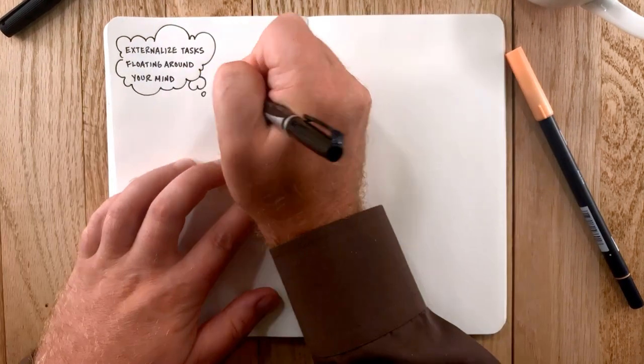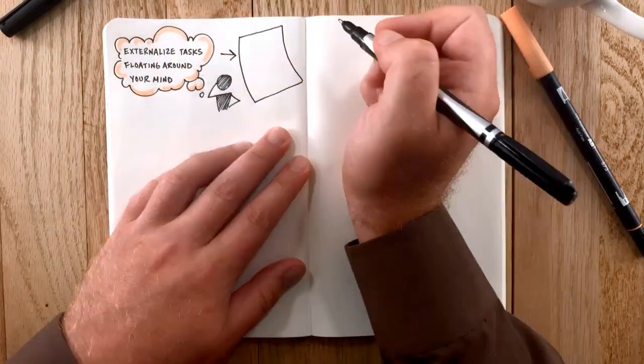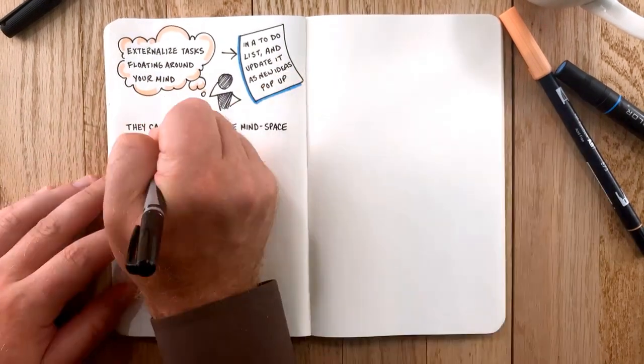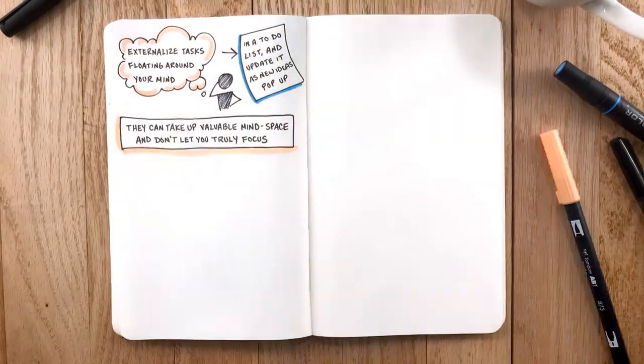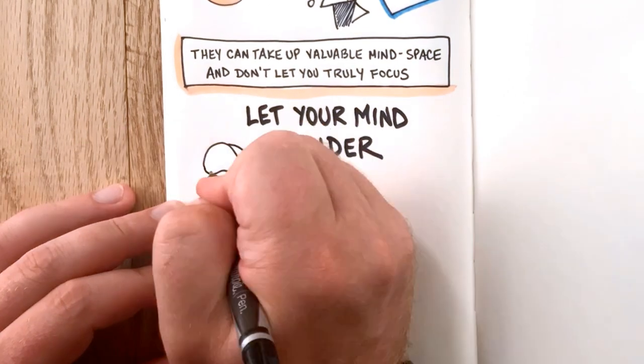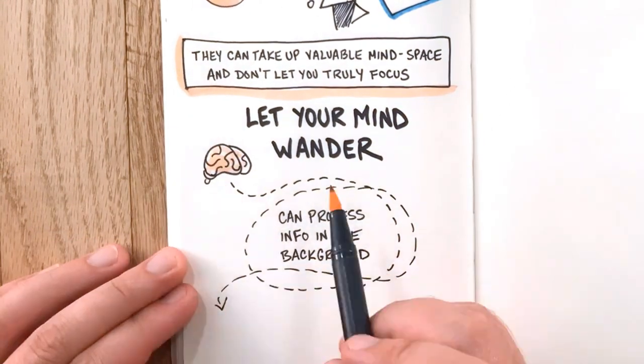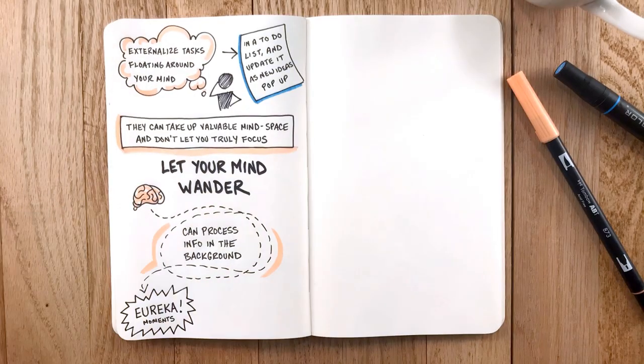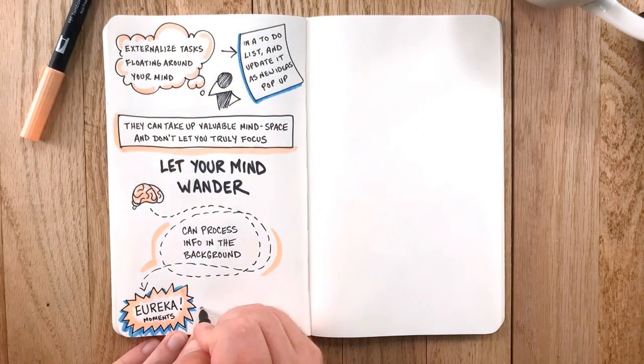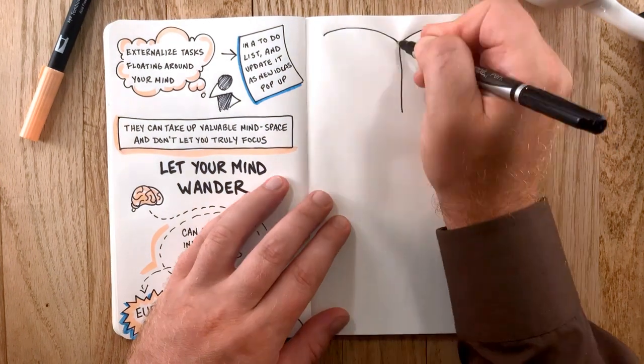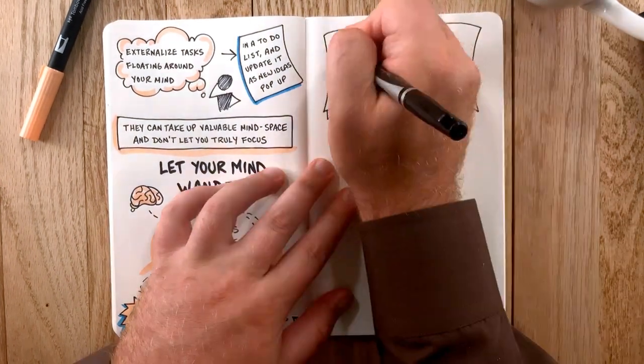Externalize all the tasks floating around your mind in a to-do list and keep updating it as new ideas pop up, because they take up valuable mind space and don't let you truly focus. And make sure to let your mind wander—your mind can process tons of information in the background. That's why you have eureka moments in the shower, as long as you stop bombarding it with email and YouTube videos. In the book, you'll find many tactics and exercises to put you back in control.